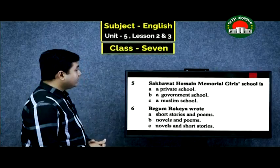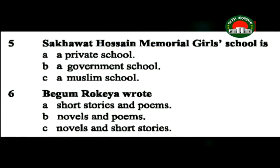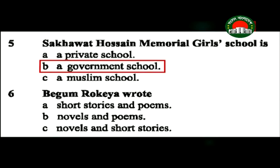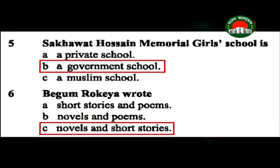Begum Rokya wrote novels and short stories (option C is correct). Here you can see some comprehension questions: What did Begum Rokya do for female education? Why did she move Shakwath Memorial Girls' High School to Kolkata? What are some of her important writings? The answers are: She established Shakwath Memorial Girls' High School for female education. She moved the school to Kolkata because there was a dispute among the members of her husband's family over the school land. Some of her important writings are Motichur, Sultanah's Dream, Paddurag, etc.